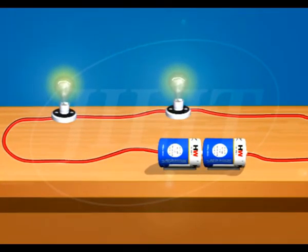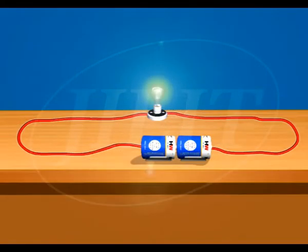In a series circuit, all bulbs are connected one after the other in the same path. For a single bulb, there is some resistance and the corresponding current and brightness.